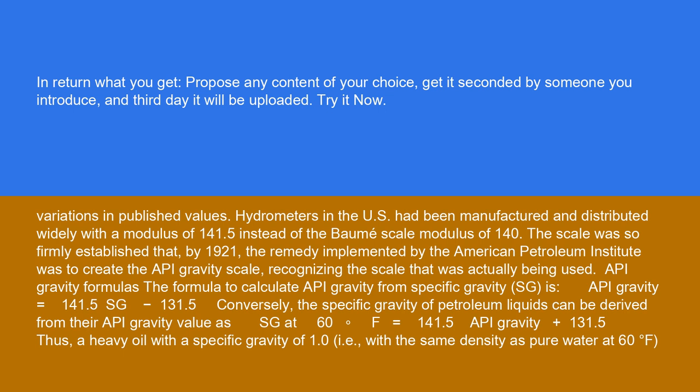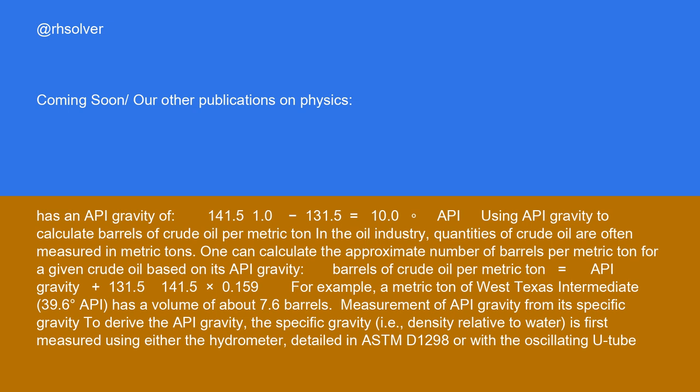Thus, a heavy oil with a specific gravity of 1.0, i.e. with the same density as pure water at 60 degrees Fahrenheit, has an API gravity of 141.5/1.0 minus 131.5 equals 10.0° API.